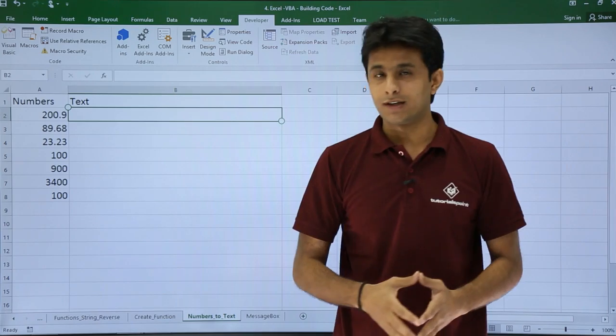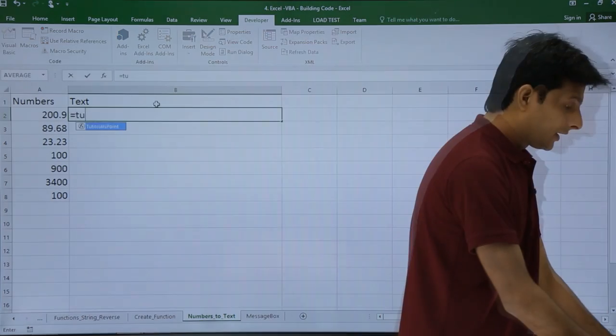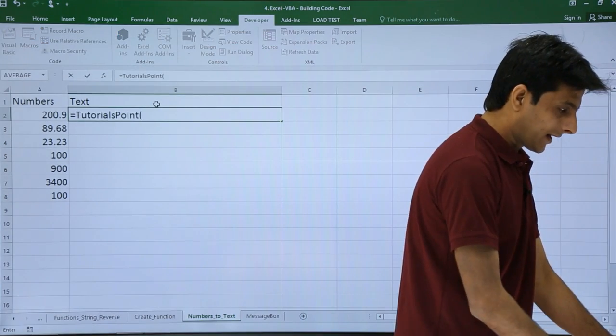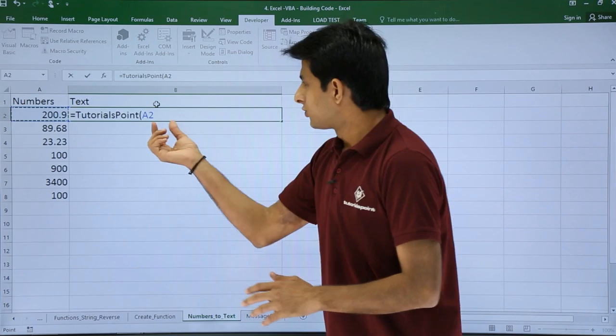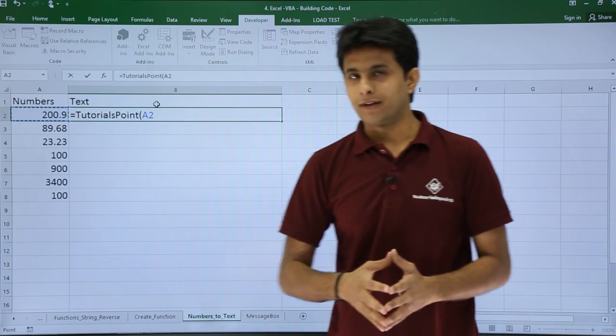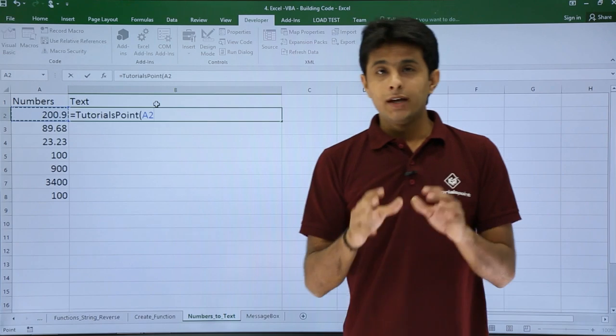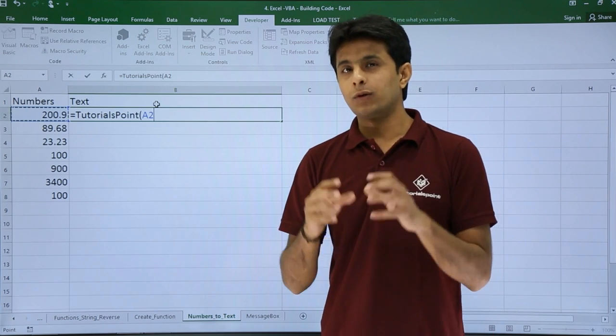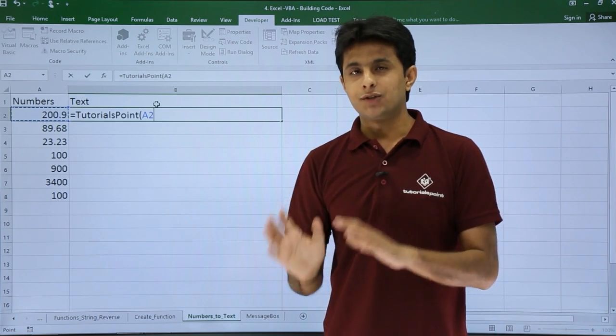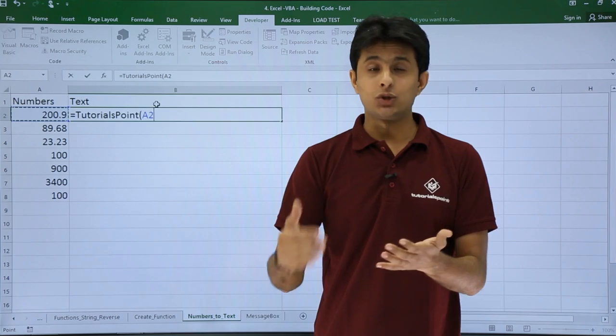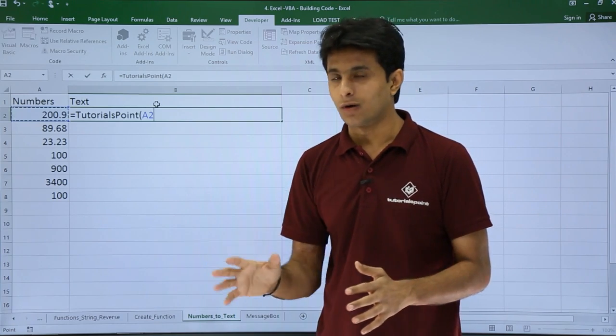Keep your cursor here and type =TutorialsPoint, and in brackets put the cell number. If you see, I have the cell number given here: =TutorialsPoint(A2). If you don't want to give the cell reference, just type the number there, like 100, 250, whatever you want.